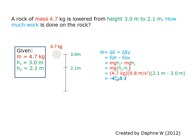And we substitute the numbers in. We get 4.7 kg times the gravity, which is 9.8 m per second squared, and that times the change in height, 2.1 m minus 3 m. And so our final answer is negative 41.5 joules.